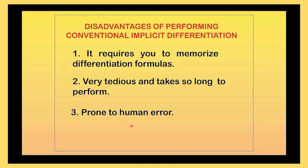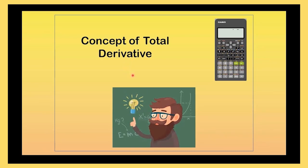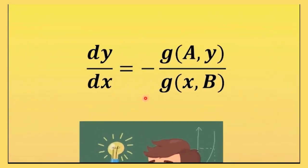So, but the problem here is if the function is expressed implicitly, you cannot use your calculator directly. So an idea comes into my mind. I think of a concept of total derivative and the calculator. And I merge them and I devise a formula like this.